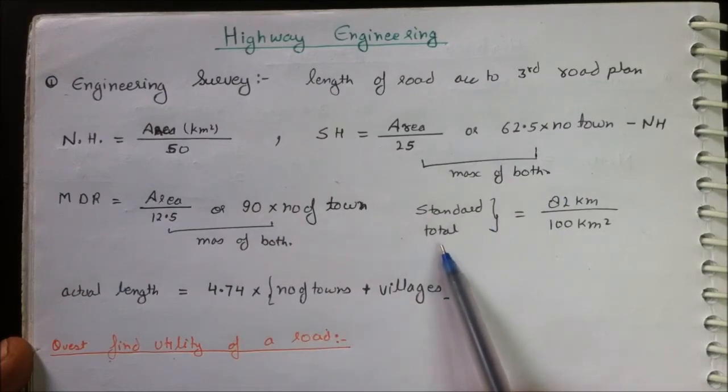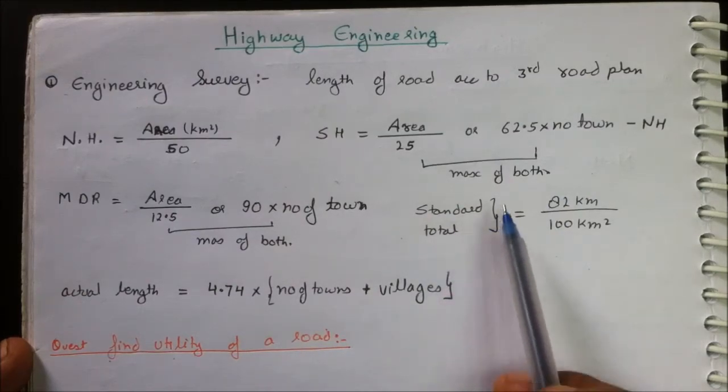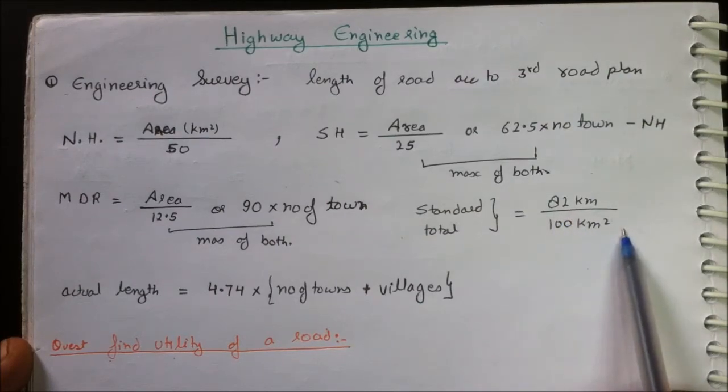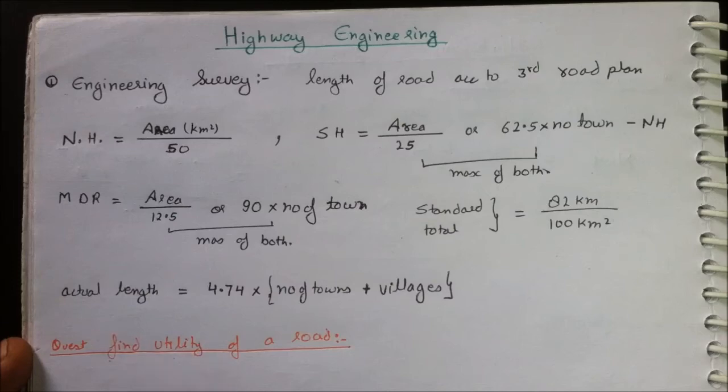Now the actual length of the roads can be found out by 4.74 times the number of towns plus number of villages. This is all about the length of the roads in the third road year plan.